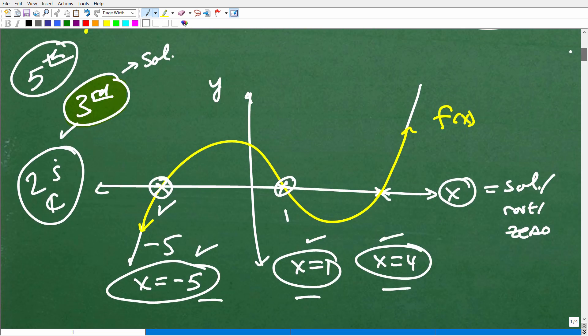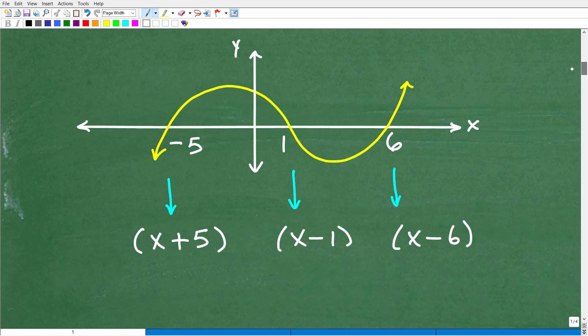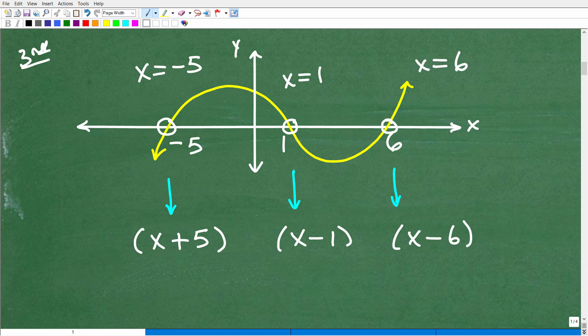All right, so let's get into it. Okay, so if this is a third-degree polynomial, this is the graph of a third-degree polynomial, I have my three solutions here. I'm looking at where the polynomial is crossing the x-axis. So I got negative 5, positive 1, and positive 6. So x equals negative 5 is a solution. x equals 1 is a solution, and x equals 6 is a solution. Third-degree polynomial, I have all my three solutions.